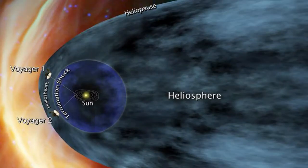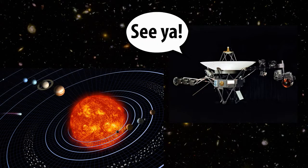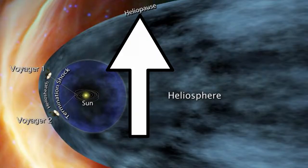Voyager continues to study the outer region of our solar system until about 2014, when it is finally projected to leave the solar system for good by crossing the heliopause.